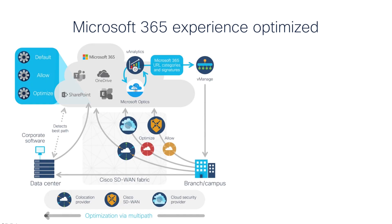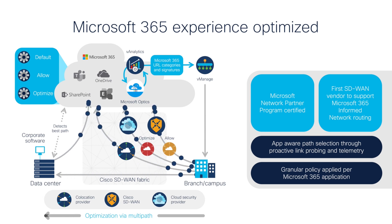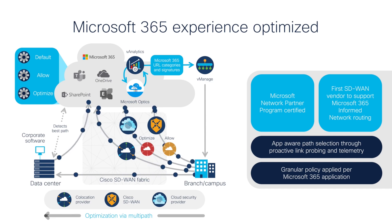Cisco's cloud on-ramp also optimizes Microsoft 365, providing URL categorization for every type of traffic to segregate and prioritize the most important communications from the rest, so that enterprises have the flexibility to customize and personalize based on their individual needs. Enterprises are also given deeper visibility into network and application analytics and performance through informed network routing telemetry for Microsoft Exchange, Teams, and SharePoint.